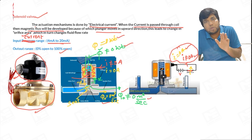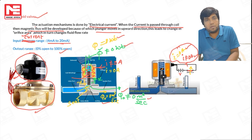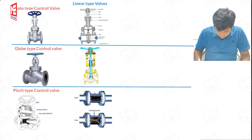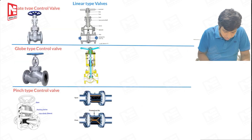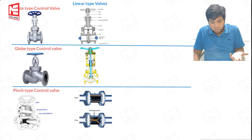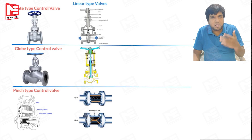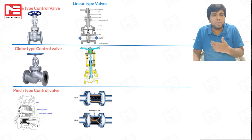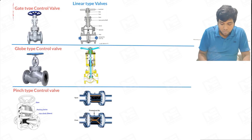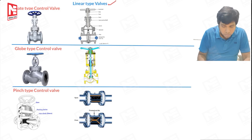Now we discuss the remaining types of valves classified based on their construction. Based on the construction structure, control valves are broadly classified into two types: linear type control valves and rotatory type control valves.